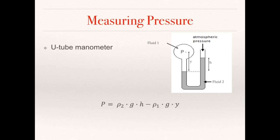Alternatively, we can use a U-tube manometer to measure fluid pressure. We can measure the pressure at a point in fluid 1 by looking at the vertical height at which the meeting point for the two fluids sits. Often, fluid 2 is a dense fluid such as mercury. The balance point, represented here by the dotted line, is the point at which the pressures in fluid 1 and 2 are equal. We can calculate the pressure at point P as the pressure increase from the atmosphere by distance H in fluid 2, minus the pressure reduction across distance Y in fluid 1. These are the principles used in blood pressure monitors.